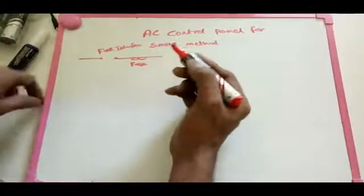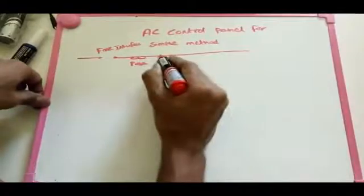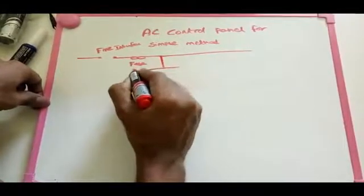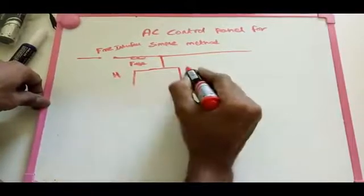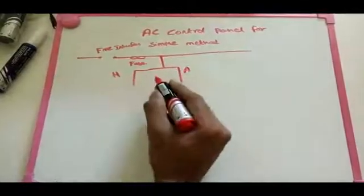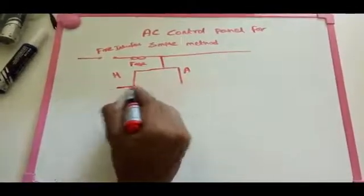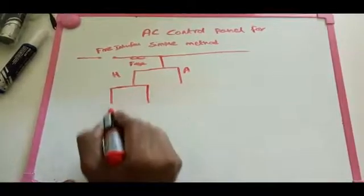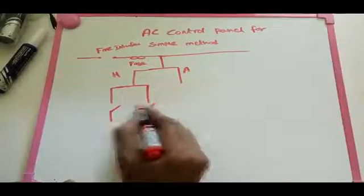We need two operations: hand operation and automatic operation. What is meant by hand and automatic? Suppose during any maintenance time or if any problem occurs on the auto side, we need to operate the AC manually. That is why we make a hand-auto selector switch — selector switch 1 and selector switch 2.